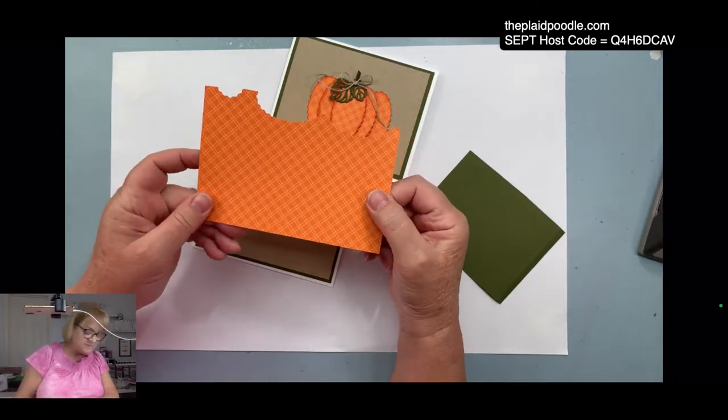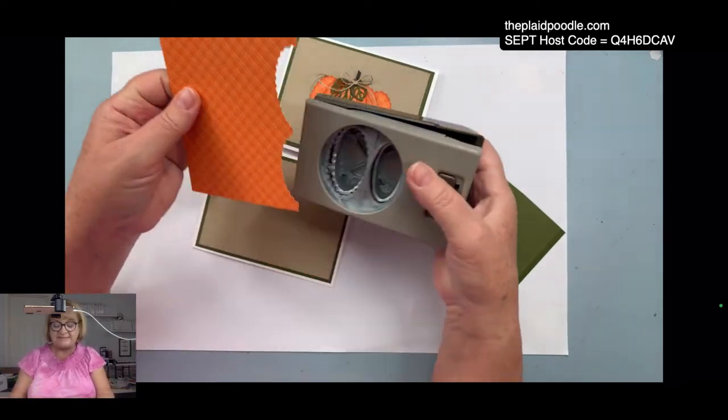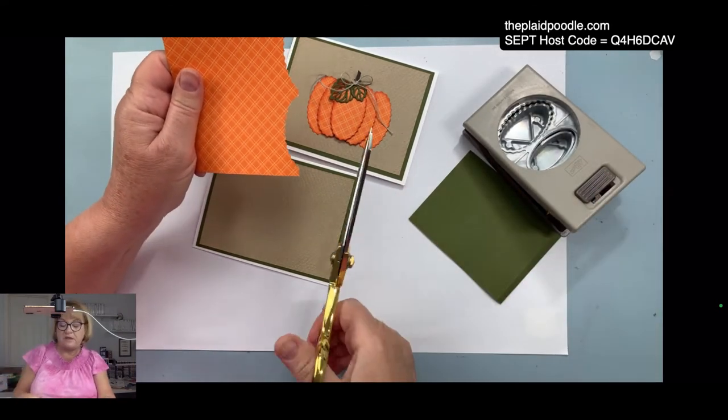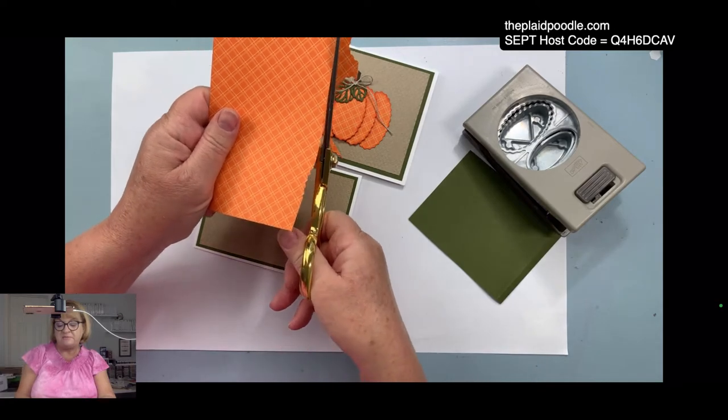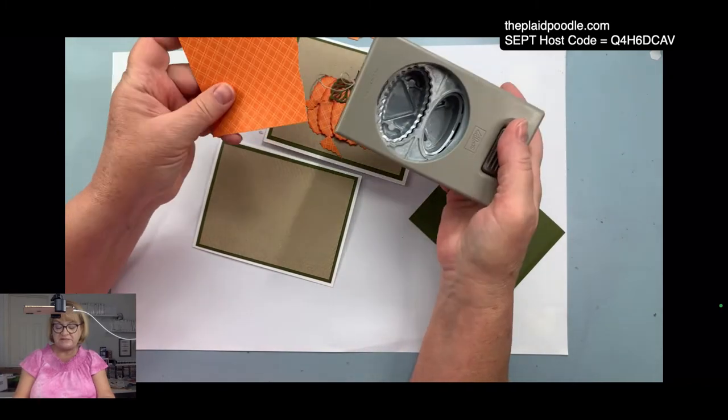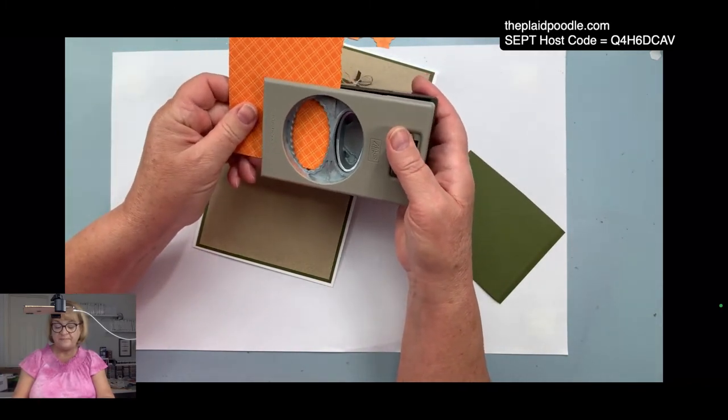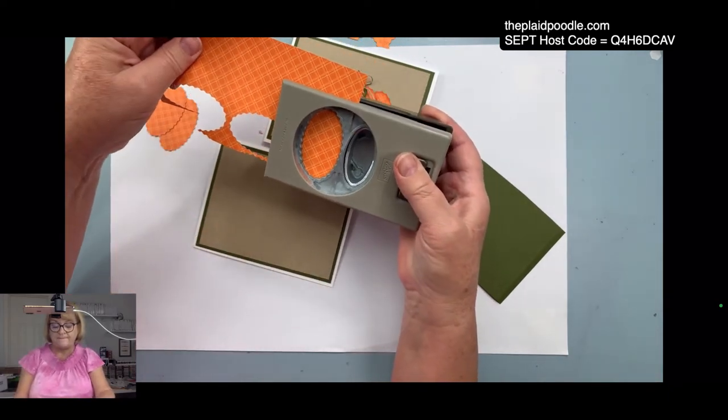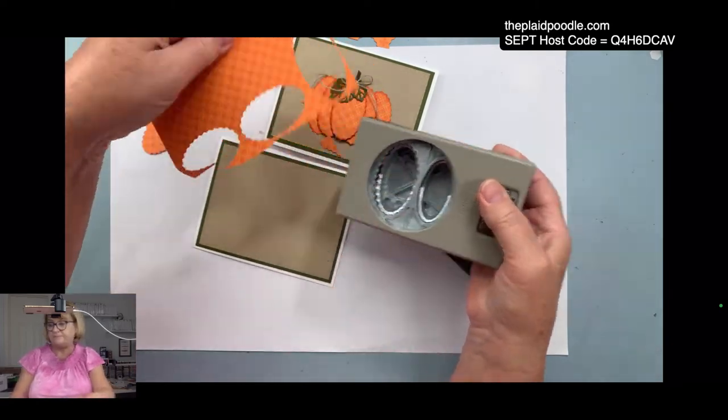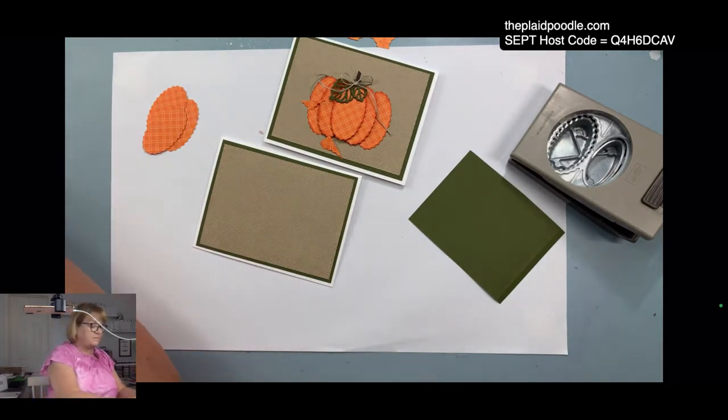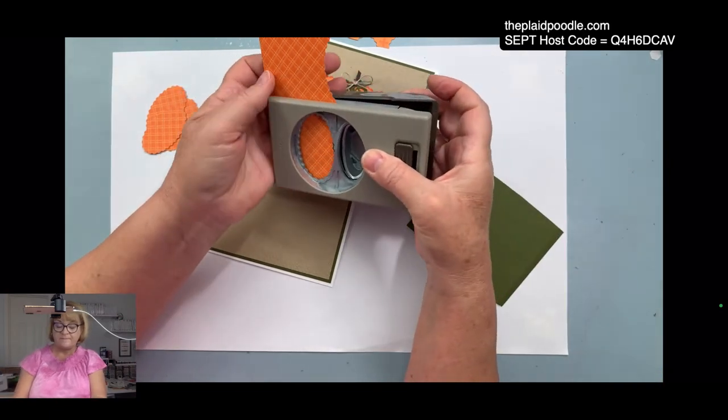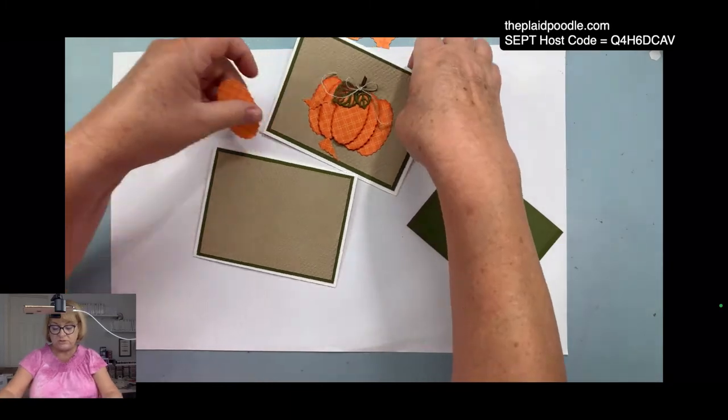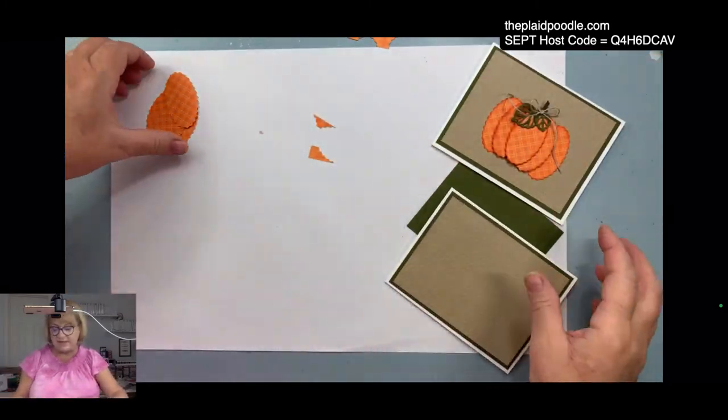The pumpkin, let's get to the pumpkin. I took a piece of the six by six regals in the pumpkin pie and I chose the little plaid pattern. I'm just going to straighten this edge out a little bit and I need five of these ovals.